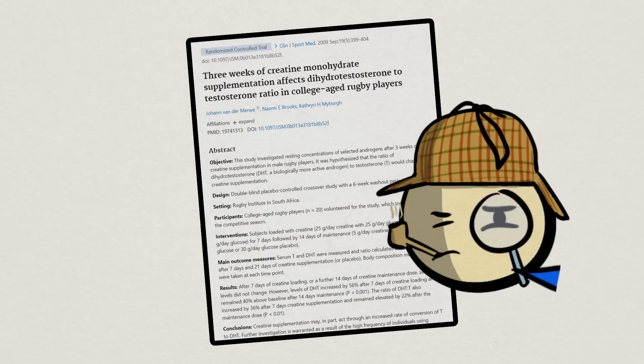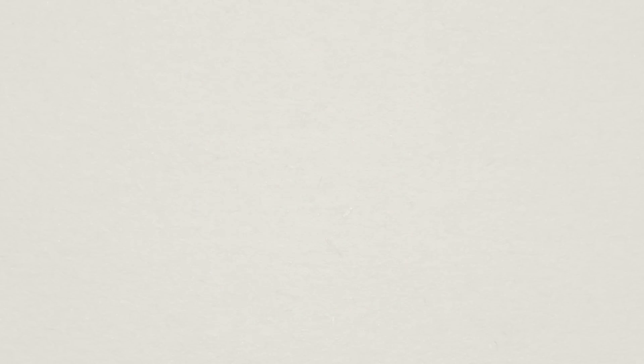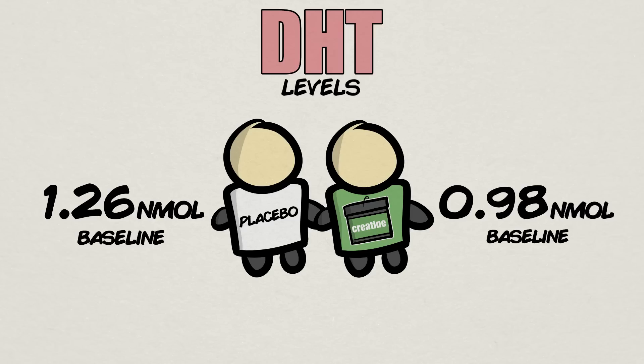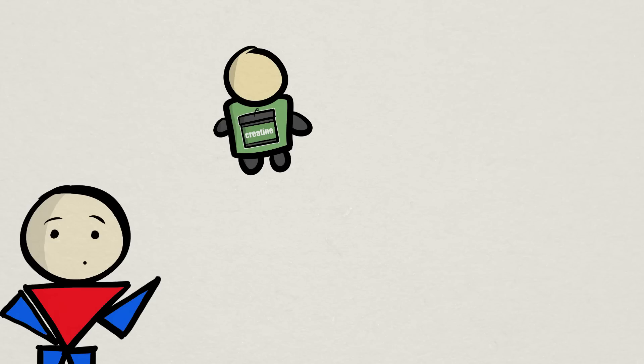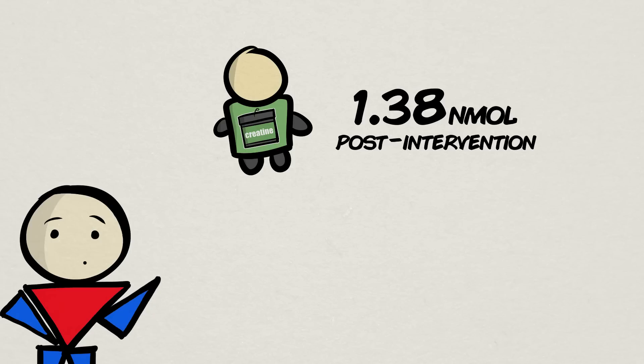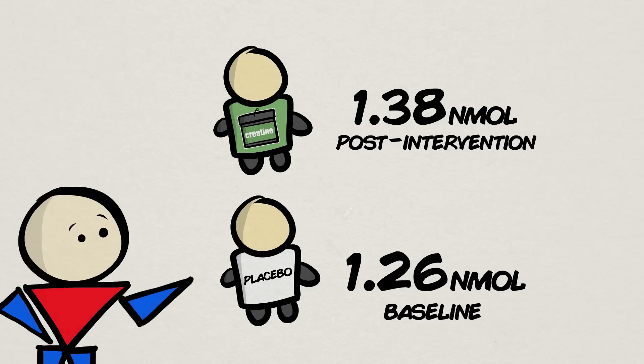But upon closer inspection of this study, interestingly, the placebo group, the group that didn't consume any creatine, started at a much higher DHT level, 1.26 nanomoles per liter compared to 0.98 nanomoles for the creatine group. Very interesting discrepancy. Although the creatine group's DHT level did increase, at the end of the 21 days, they peaked at 1.38 nanomoles per liter. Not that far from the baseline of the placebo group and certainly does not seem to be as significant of a change as we initially thought.